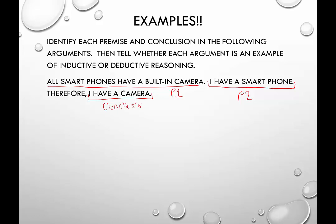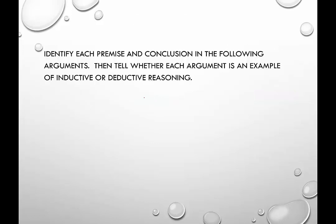So that was part one — labeling each sentence or statement. Now we need to decide: is this inductive or deductive reasoning? Remember, inductive reasoning is when we make a conclusion based on observed patterns. Deductive reasoning is when we take a known truth and apply it to a specific example. In this case, the known truth is that all smartphones have a built-in camera. The specific example is me having a smartphone, with the conclusion that I have a camera. So this would be an example of deductive reasoning.